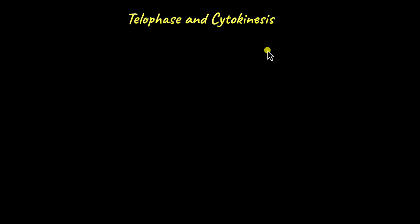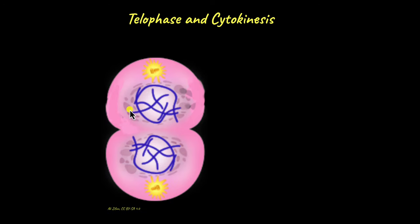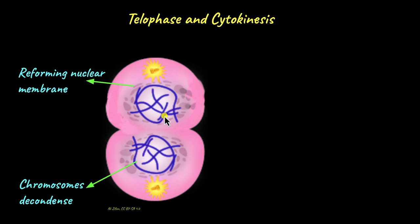Telophase is the last phase in mitosis and can be thought of as the reverse of prophase. The nuclear membrane begins to reform, and the chromosomes — which were clearly visible until now — begin to decondense and form chromatin again. Chromosomes are essentially formed only when the cell divides, and they are clearly visible during prophase and the transition into metaphase. After karyokinesis — the splitting of sister chromatids — the chromosomes decondense back to chromatin. Microtubules also begin to disappear, having completed their job of pulling the sister chromatids to opposite poles.